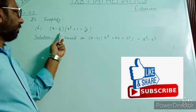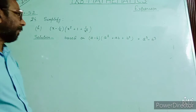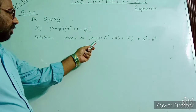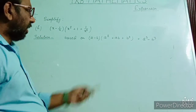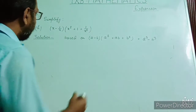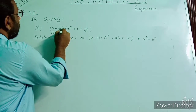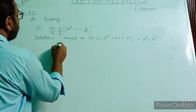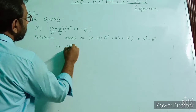The expression is: x minus 1/x, into x squared plus 1 plus 1/x squared. This question is based on the identity (a minus b)(a squared plus ab plus b squared) equals a cubed minus b cubed. At the place of a we have x, and at the place of b we have 1/x.